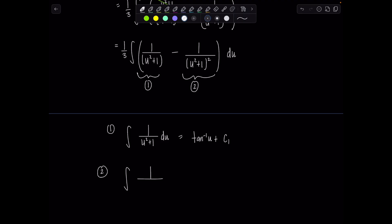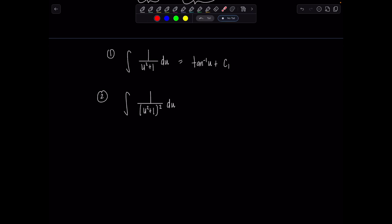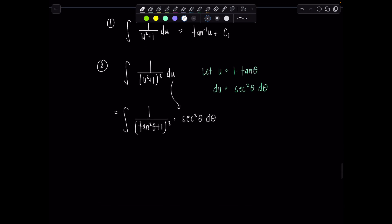Integral number two, one over u squared plus one squared du. No, this does not just jump straight to tan inverse because notice the denominator is squared. So what do we do in this scenario? Why yes, we trig sub. So we're going to let u equal one tan theta, which means du is secant squared theta d theta. Good. So then we're going to have here integral one over u squared will now be tan squared theta plus one. All of this is squared and then du is secant squared theta d theta. Lovely, lovely.